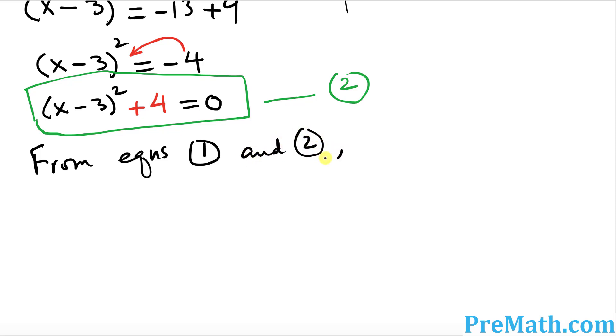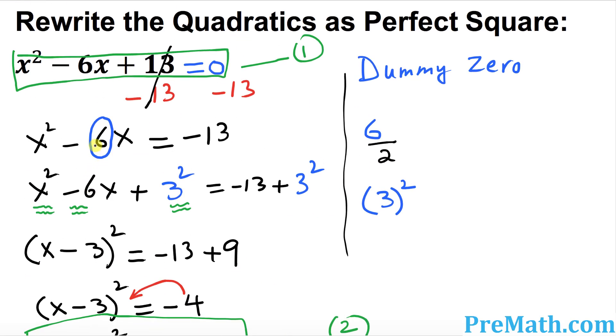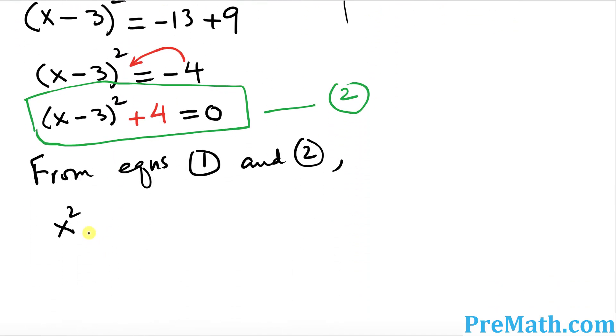So I want you to write down the left hand side, which was x squared, look at this thing, x squared minus 6x plus 13, the left hand side of this thing, is going to be equal to x minus 3 squared plus 4, and that is our perfect square for this given polynomial. So that is our answer.